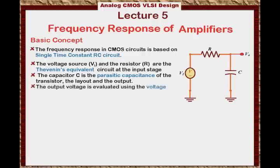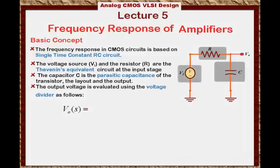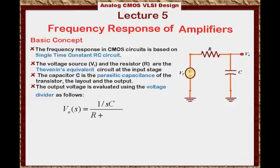Now we can say that the output voltage Vout can be evaluated using the voltage divider. Because you have two impedances in series connected to VI, then Vout is nothing but the voltage divider. Vout of S will equal to 1 over SC over R plus 1 over SC times VI of S. Here we are using the impedance of the capacitor to be 1 over SC, so we are using the S domain. By multiplying SC on the top and the bottom, we can see that Vout of S will equal to 1 over 1 plus S times RC times VI.